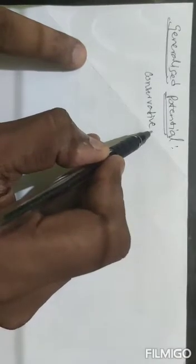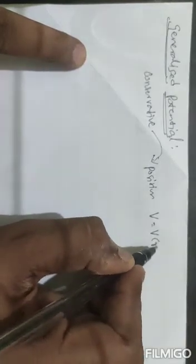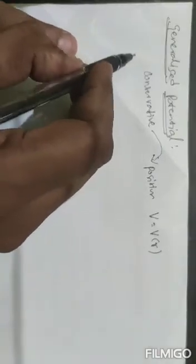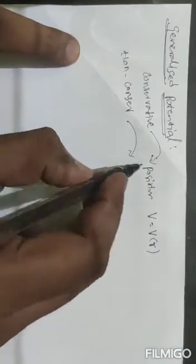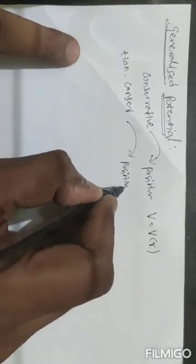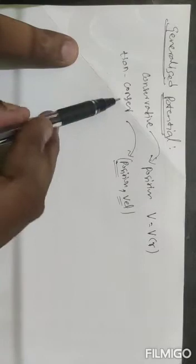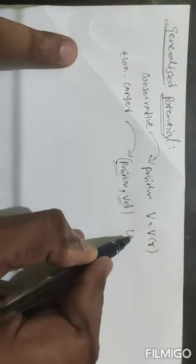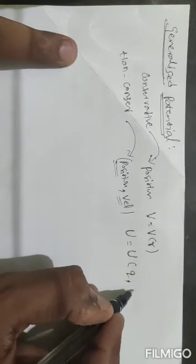Suppose there is a conservative system — conservative potential depends only on the position coordinates, so V is a function of position coordinates. Now if it is non-conservative, the potential depends on position plus velocity. So U is equal to U of q and q̇.